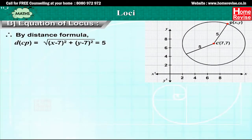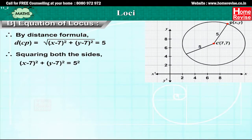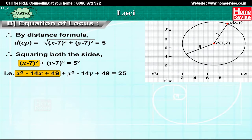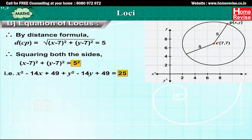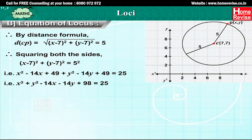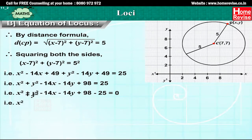By the distance formula, CP = √[(x − 7)² + (y − 7)²] = 5. Squaring both sides: (x − 7)² + (y − 7)² = 25. Opening the brackets: x² − 14x + 49 + y² − 14y + 49 = 25, that is x² + y² − 14x − 14y + 98 = 25, which gives x² + y² − 14x − 14y + 73 = 0.